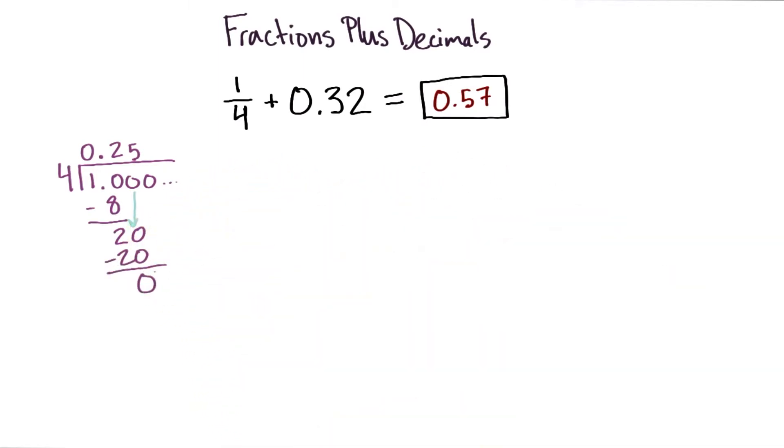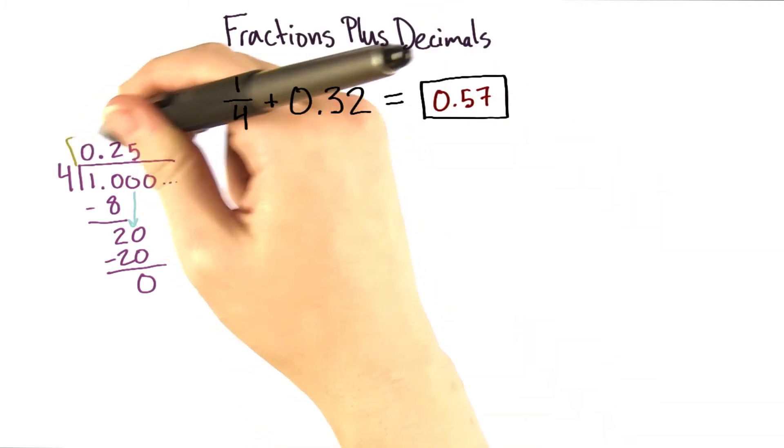Do our subtraction, and we have 0, so we can just stop right here. 1 fourth as a decimal is 0.25.